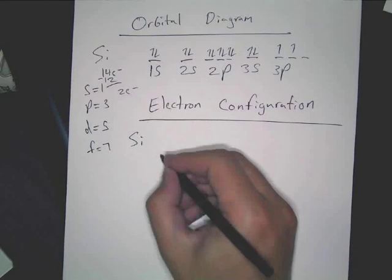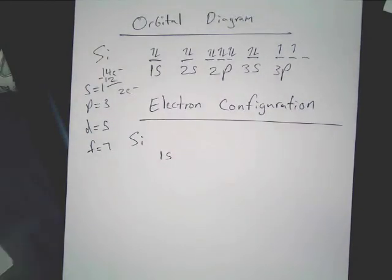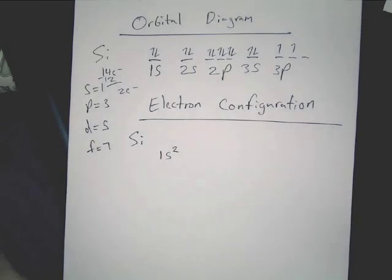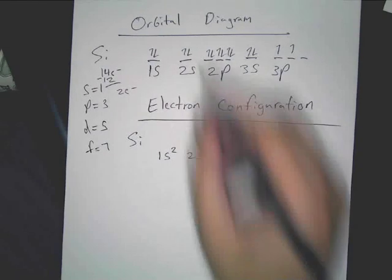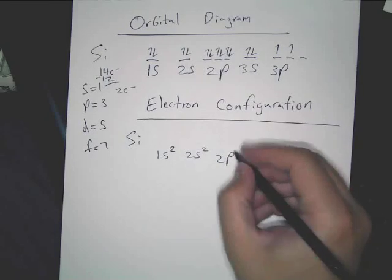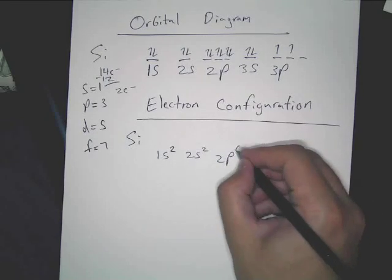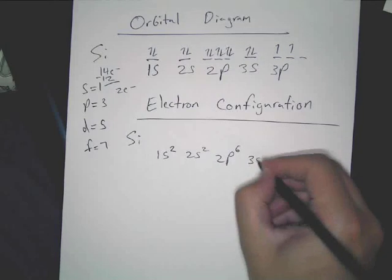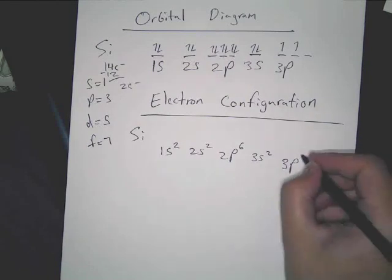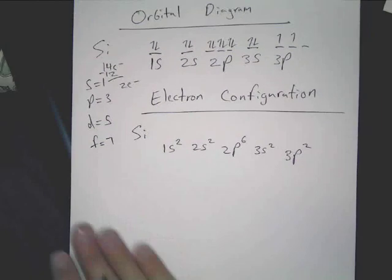Here's all we do instead of drawing arrows and orbitals. We have 1s — how many electrons are in the 1s sublevel? 2. So we just write a 2 there. Next: 2s, how many? 2. Then 2p — what do we got? 6 arrows. 3s: 2. And then 3p — how many do I have? 2. It's not filled to 6, so you just write 2. And there you go: 1s²2s²2p⁶3s²3p².